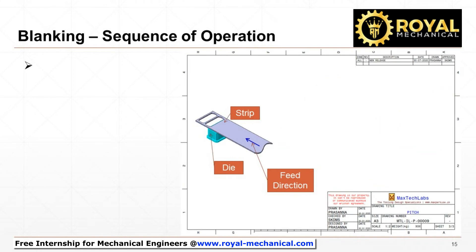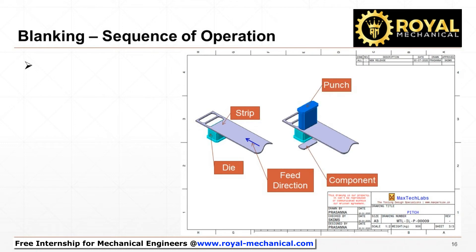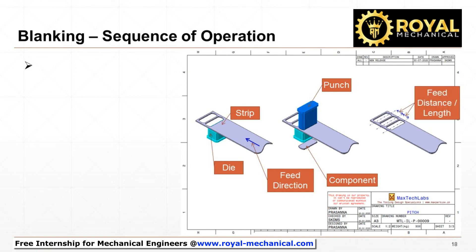Next, the raw material strip is again advanced. The punch which is mounted on the press slide comes down and shears the strip to blank the component. This feeding of strip and blanking goes on and on until the end of the raw material strip. Observe the condition of the strip after blanking. Observe the feed distance or feed length.